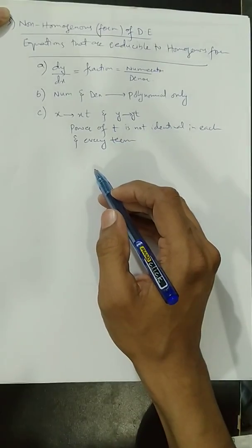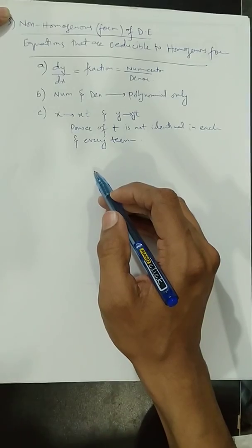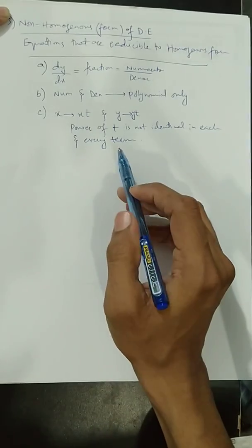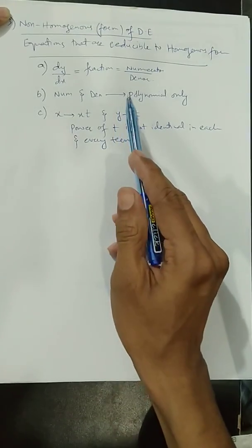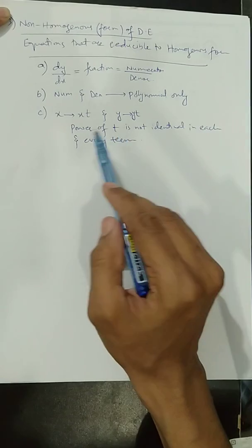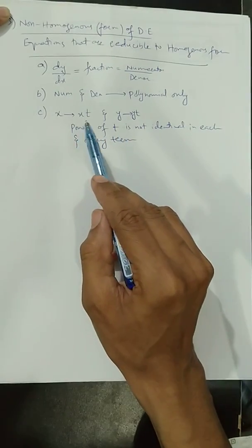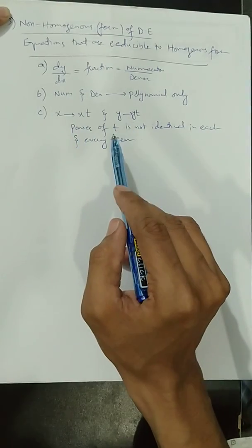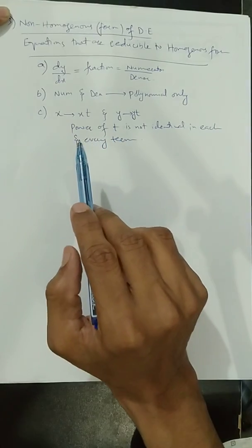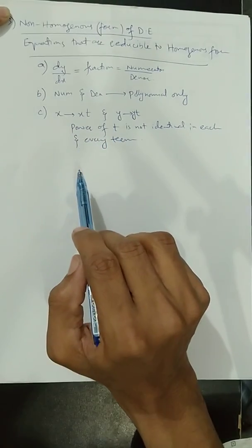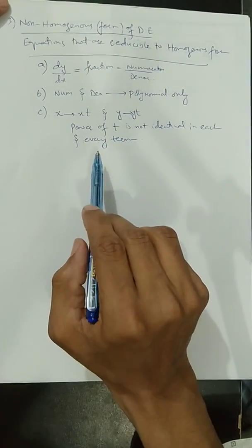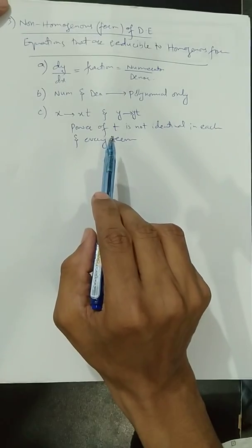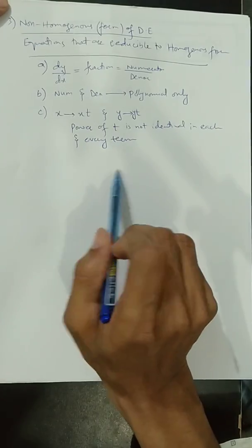In a simple homogeneous differential equation, these same three conditions hold, but after the substitution of x by xt and y by yt the power of t is identical. In a non-homogeneous equation — or an equation reducible to homogeneous form — the power of t will not be the same in each and every term.